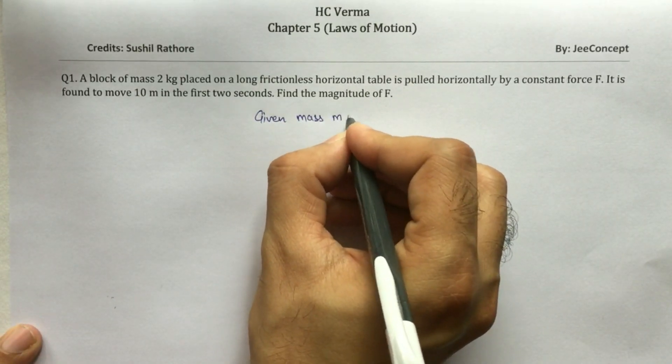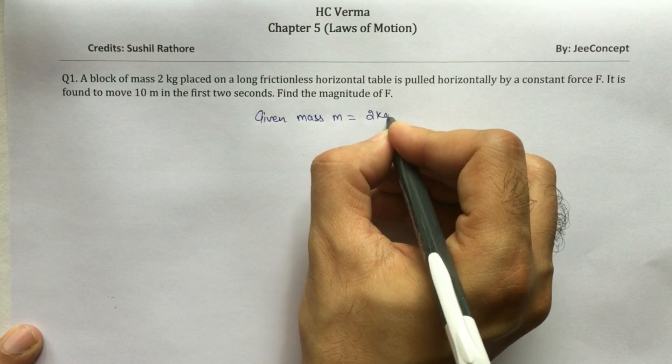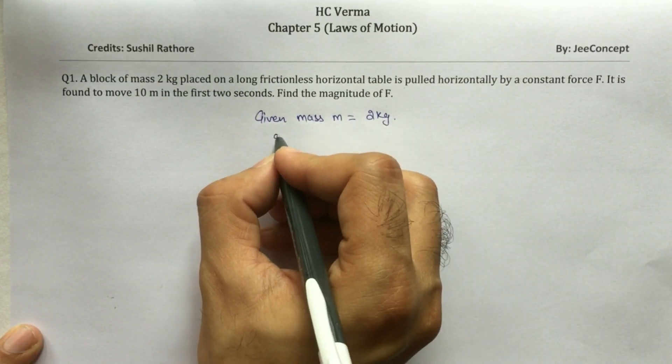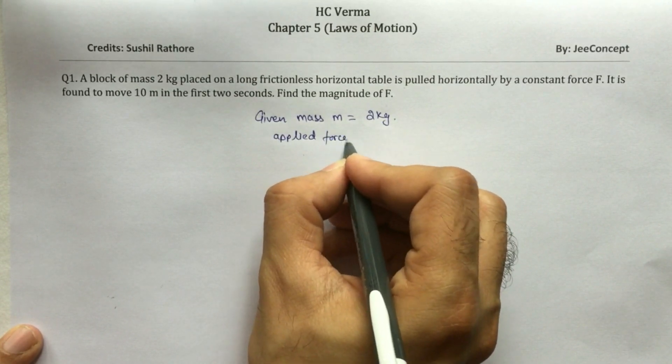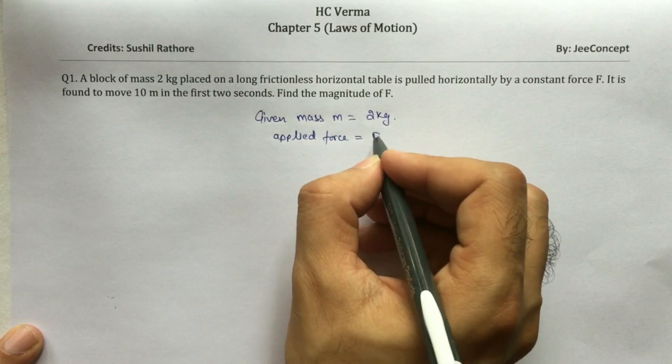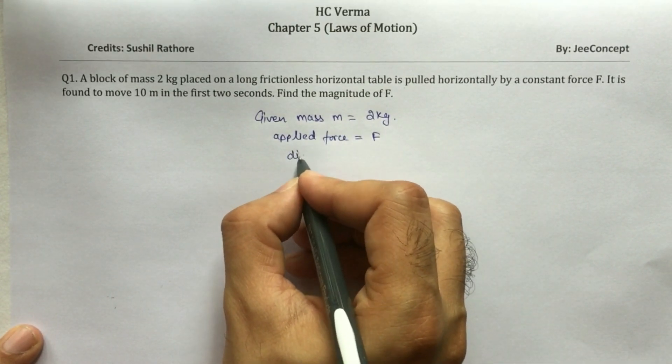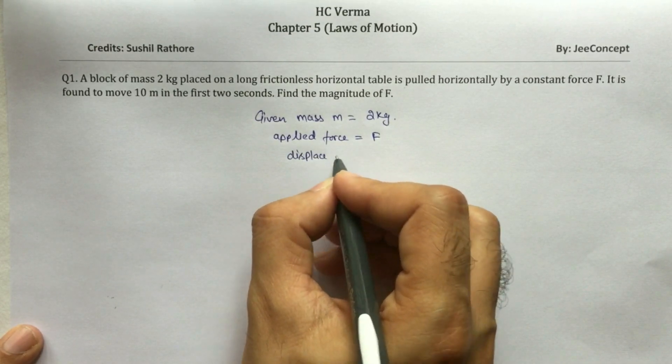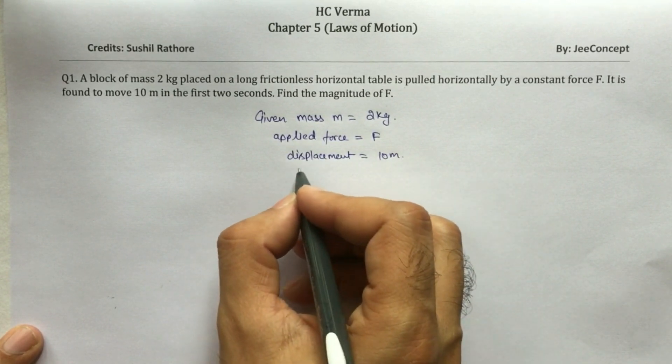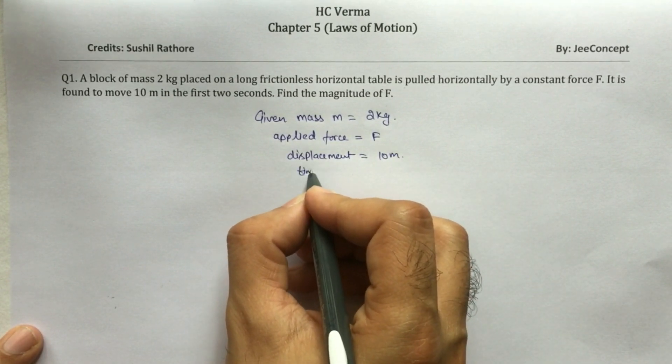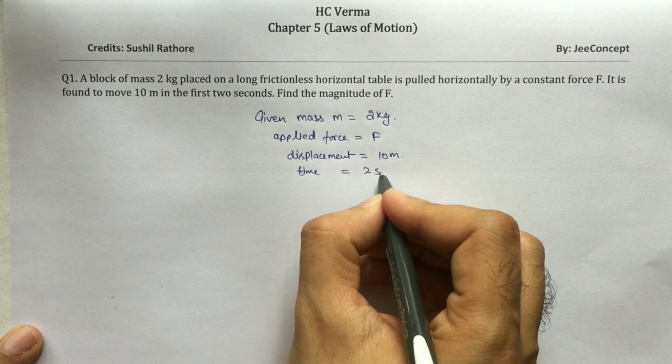Mass M is 2 kg, applied force is F, displacement is 10 meters, and the time taken for this displacement is 2 seconds.